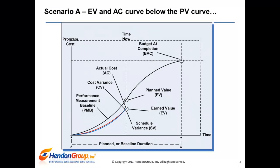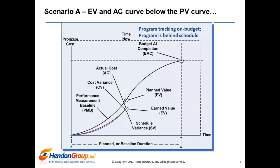In Scenario A, the earned value curve and the actual cost curve are below the planned value curve. When the EV and actual cost curves are both below the planned value curve and equal to each other, this communicates to the program sponsor there is no cost variance; however, there is schedule variance. The interpretation: the program is on budget and behind schedule. A common program sponsor response is to fast track the program by performing more work in parallel or throw more resources at it. However, fast tracking may negatively impact quality or create rework, and adding resources will most likely increase program costs.